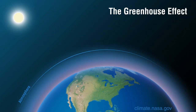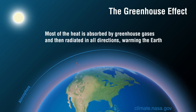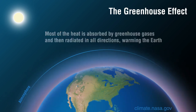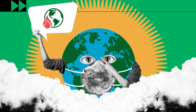Examples of greenhouse gas emissions causing climate change include carbon dioxide and methane. These come from using gasoline for driving a car or coal for heating a building. Clearing land and forests can also release carbon dioxide.